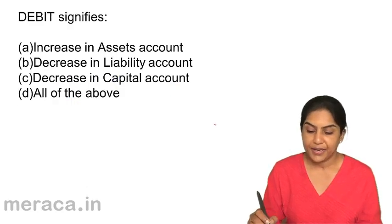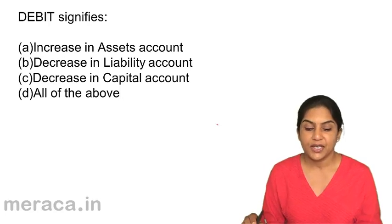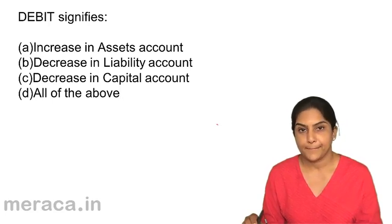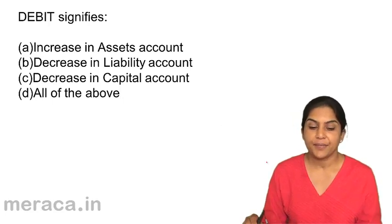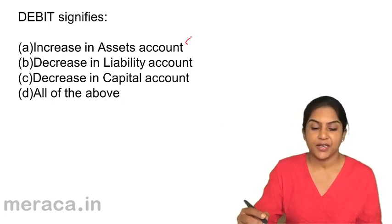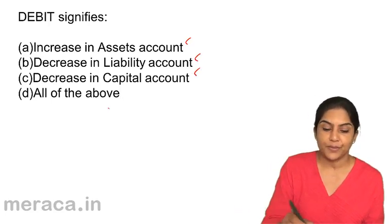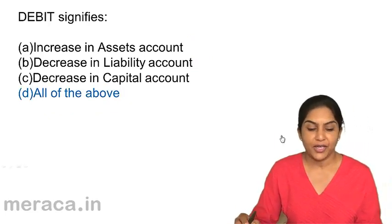Debit signifies — A: increase in asset account, B: decrease in liability account, C: decrease in capital account, D: all of the above. Increase in asset is definitely debit. Decrease in liability is also debit. Decrease in capital is also debit. Therefore your correct answer is D — all of the above.